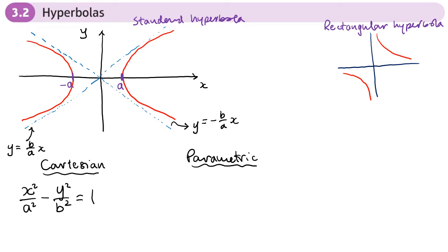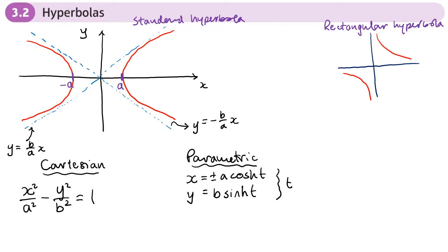In parametric form we use hyperbolic functions. The parametric equation is x equals plus or minus a cosh t, and y equals b sinh t. Here t can be any real number, whereas with the ellipse it was restricted between 0 and 2 pi.